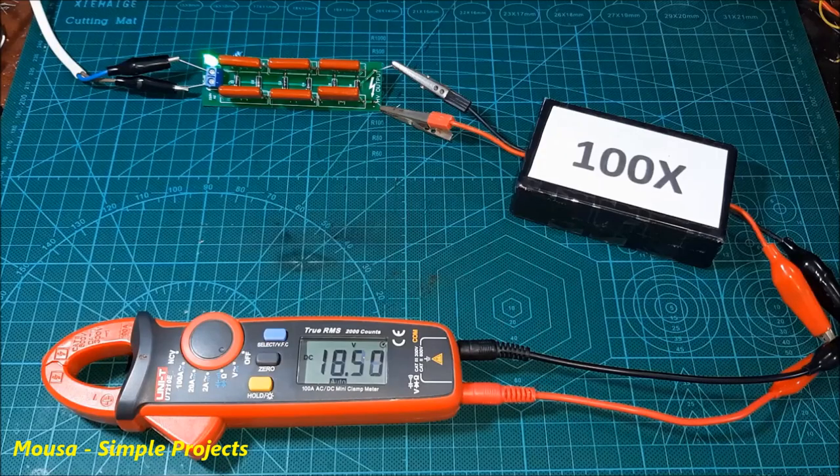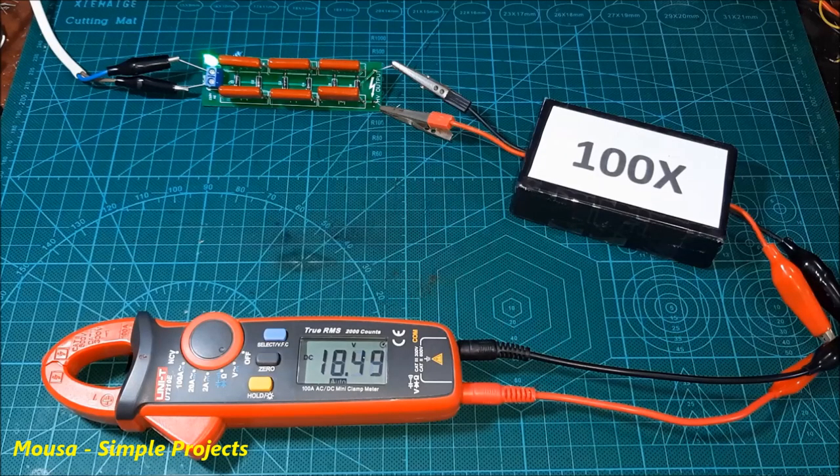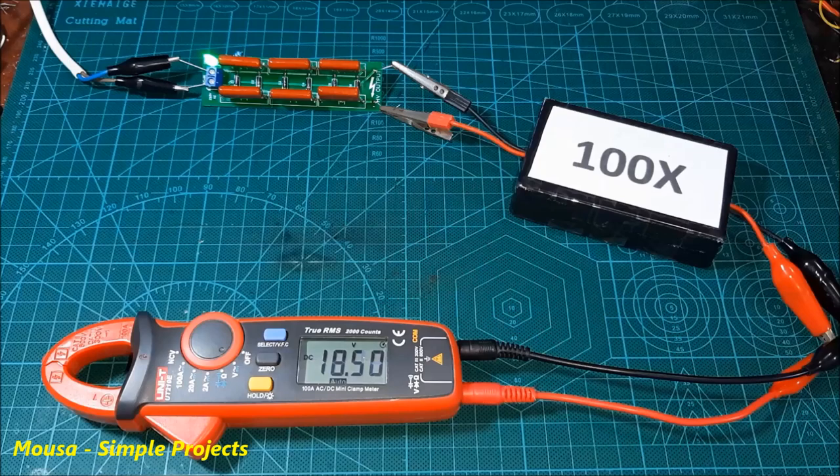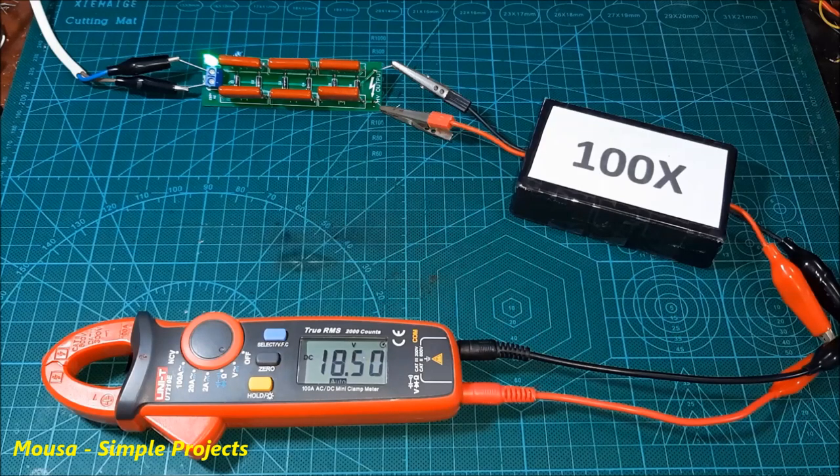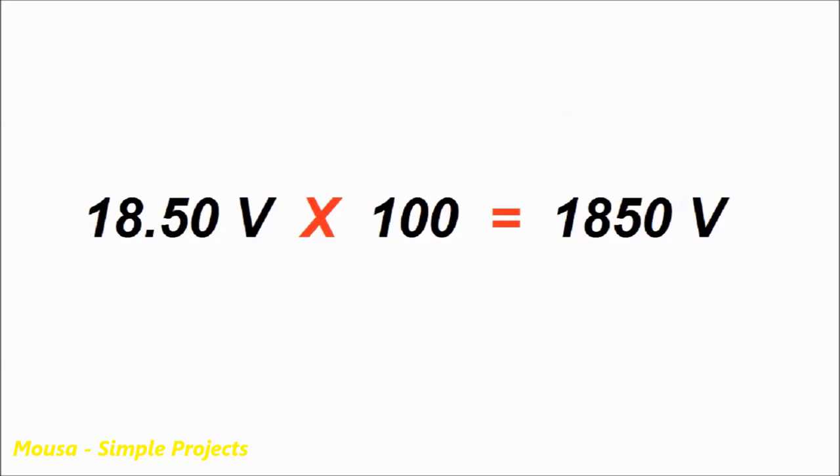As you can see, the multimeter is reading 18.5 volts. Because I'm using a 100x high voltage probe, we have to multiply this number by 100, so the output voltage is 1850 volts. It is slightly less than expected because of the capacitors' leakage, diodes' voltage drop, and even the high voltage probe may be loading the output and decreasing the output voltage.